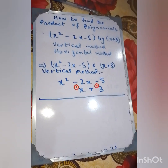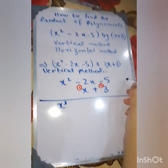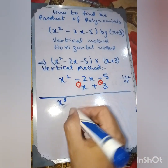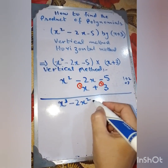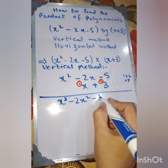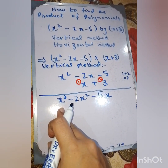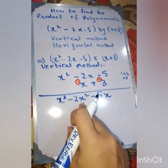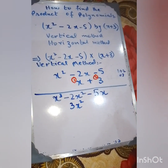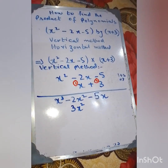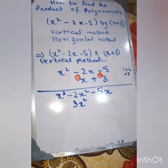First we multiply by x: x times x squared gives x cubed, powers 1 plus 2 equals 3. Then x times minus 2x: minus sign stays, giving minus 2x squared. Then x times minus 5 gives minus 5x. There is no hard and fast rule to prefer vertical or horizontal method unless the question specifically asks you to use one.